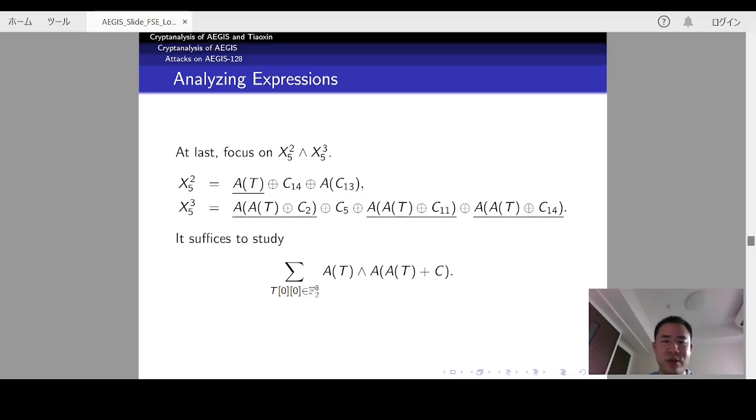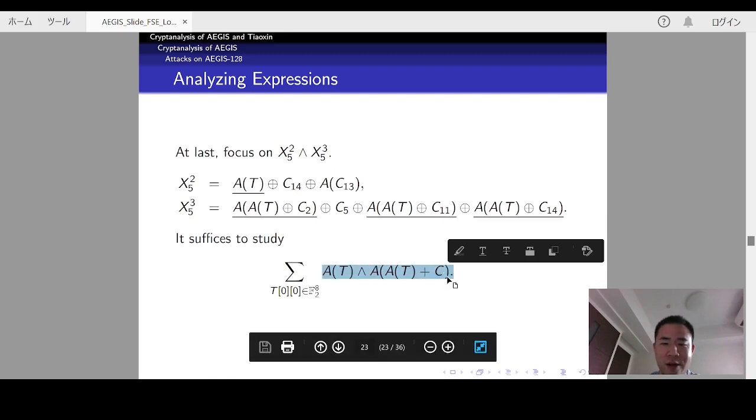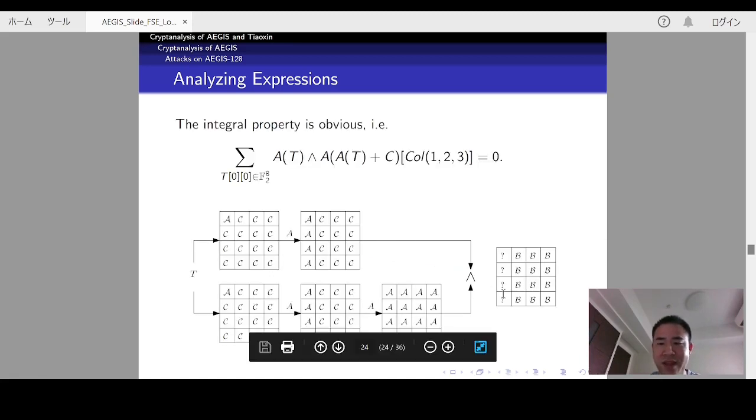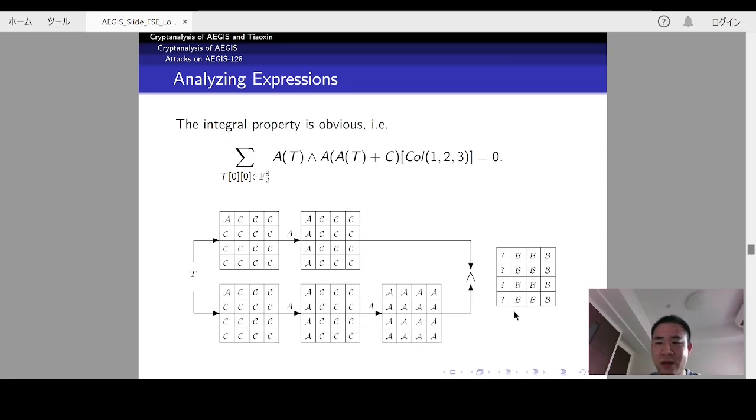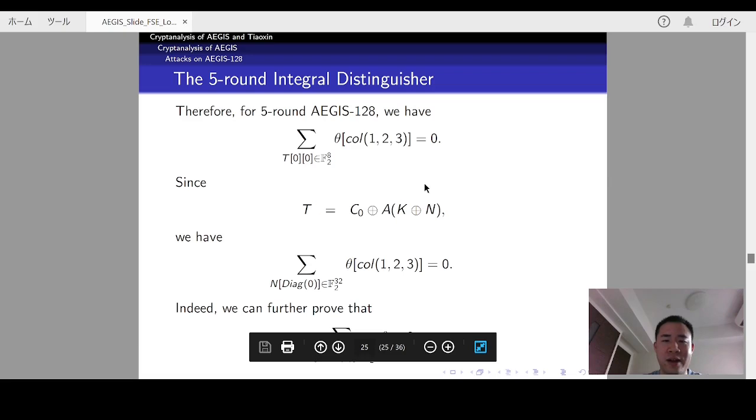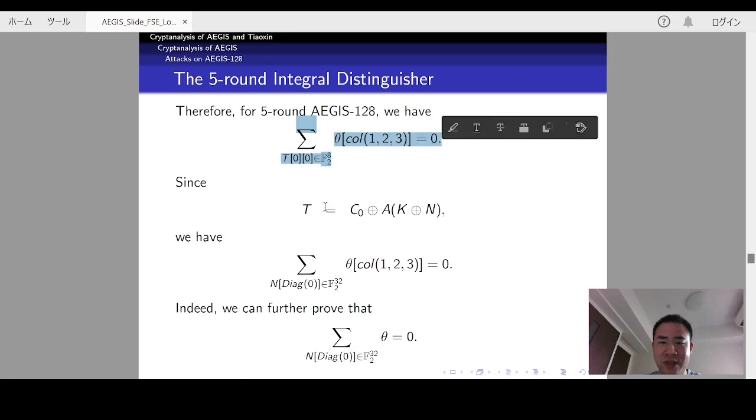At last, we need to study the integral property for X5-2 and X5-3. This is now simple because we only need to study the integral property for this expression. And from this figure, we can immediately observe that the last three columns are all balanced. So, for five round AEGIS-128, we have this integral property. By considering the relation between T and N, we have that when the first diagonal of N takes all the 2 to the 32 possible values, the last three columns of theta are balanced.